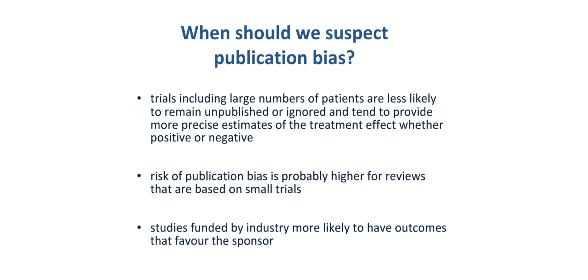Trials that include a large number of patients are less likely to remain unpublished or ignored and tend to provide more precise estimates of the treatment effect, whether or not they are positive or negative. The risk of publication bias is probably higher for reviews that are based on small trials, as small negative trials are more likely to remain unpublished. Studies funded by for-profit organizations are more likely to have outcomes that favor the sponsor, and therefore it is possible that publication bias is more likely under those circumstances.